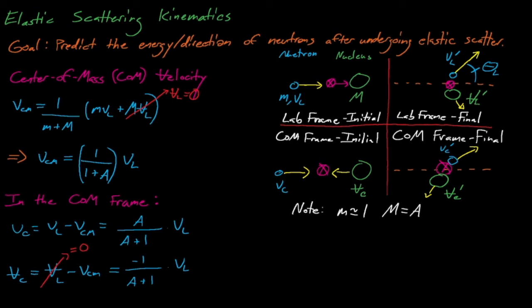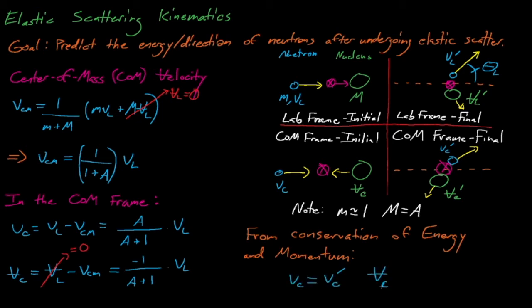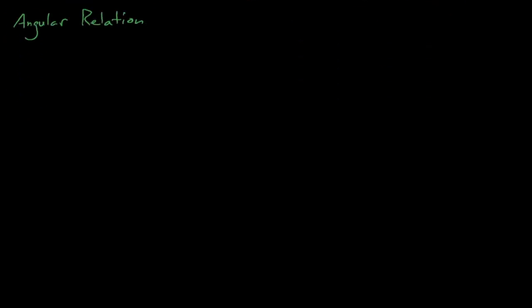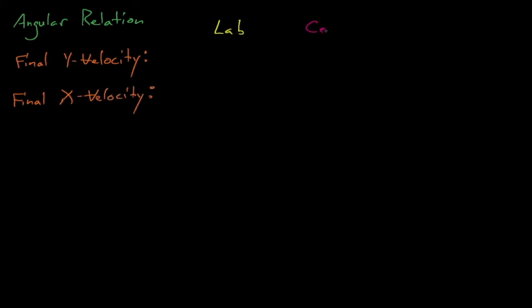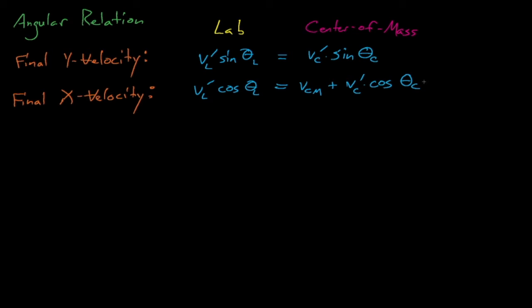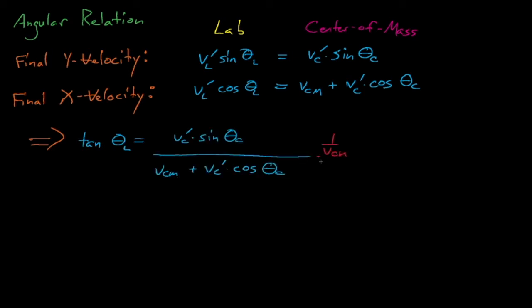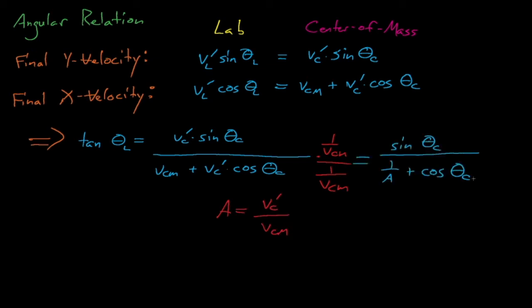Since this collision is elastic and not inelastic, we know that the kinetic energy and momentum of the system must be conserved before and after the collision. With a little mathematical analysis, the only possible way to conserve both momentum and energy in the center of mass frame is if V sub C equals V sub C prime, and capital V sub C also equals capital V sub C prime. Comparing the neutron's post-collision velocities in the laboratory and center of mass frames in both the x and y directions, and taking the ratio — noting that V sub C prime divided by V CM equals A — we find this interesting relation between the neutron scattering angles in the laboratory and the center of mass frames.